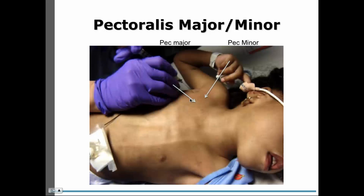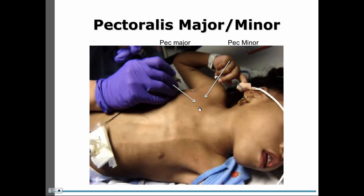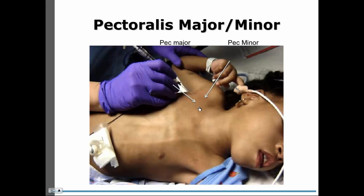The next slide shows the typical injection sites. You can see the shoulder is adducted, but the problem for the injector is you don't know if you are in the pectoralis major or pectoralis minor. This is why we started thinking about using ultrasound, which can clearly differentiate between the two muscles.